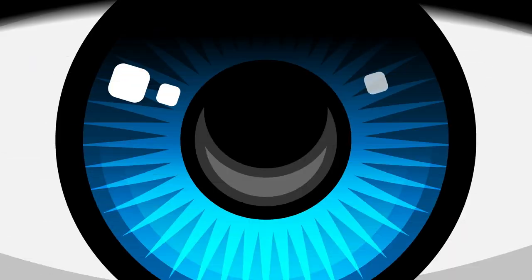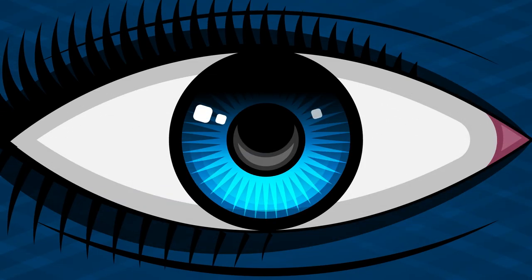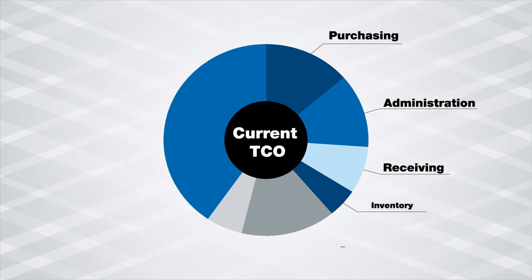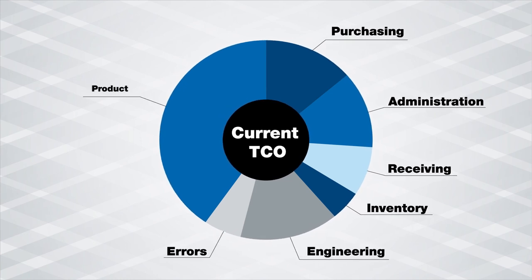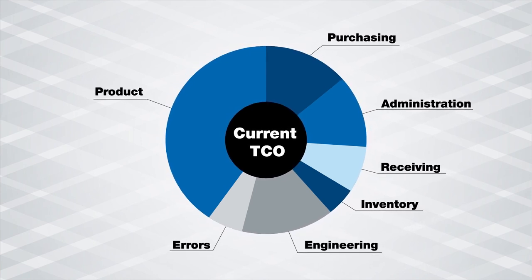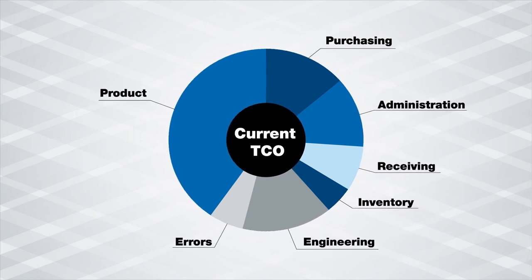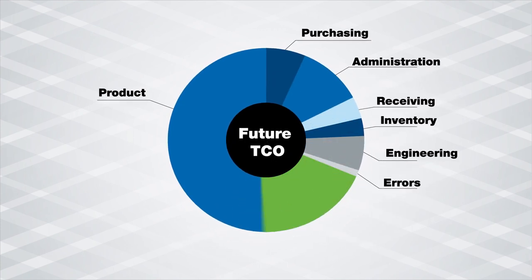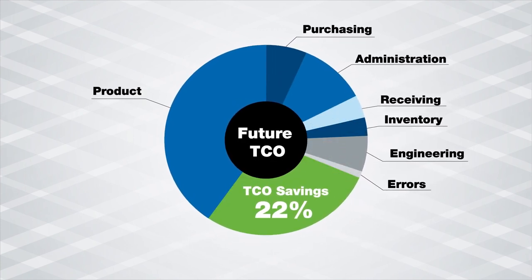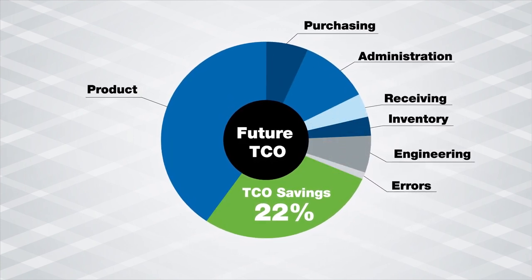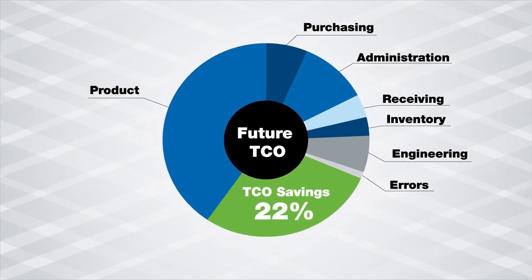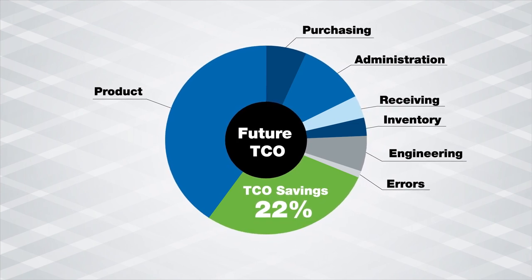Through the lens of T.C.O., the picture is clear. With industrial supplies, the bulk of the cost isn't in the product — it's in the process. This spells opportunity, because while price may be improved marginally, processes can usually be improved dramatically, driving significant T.C.O. savings.